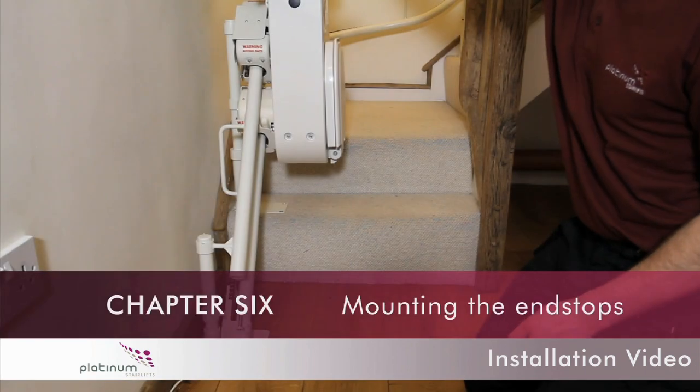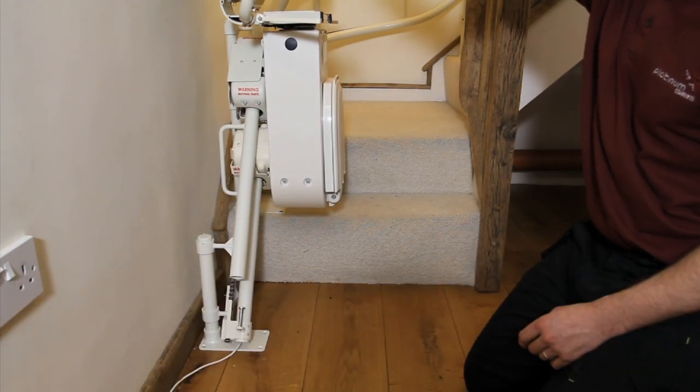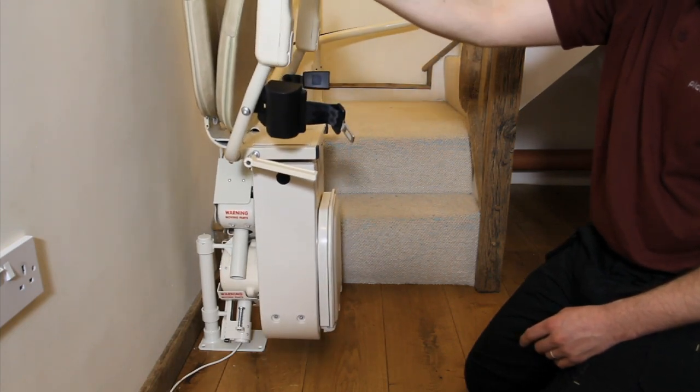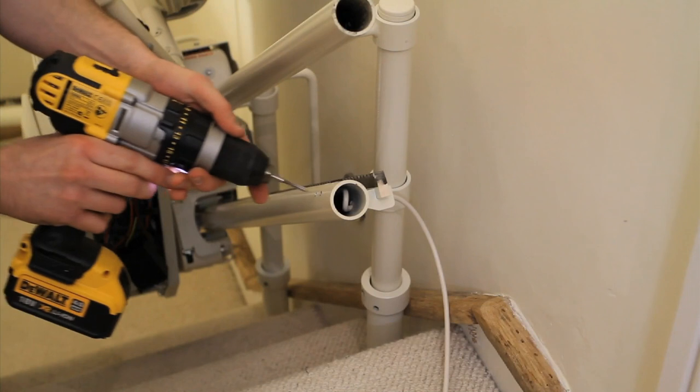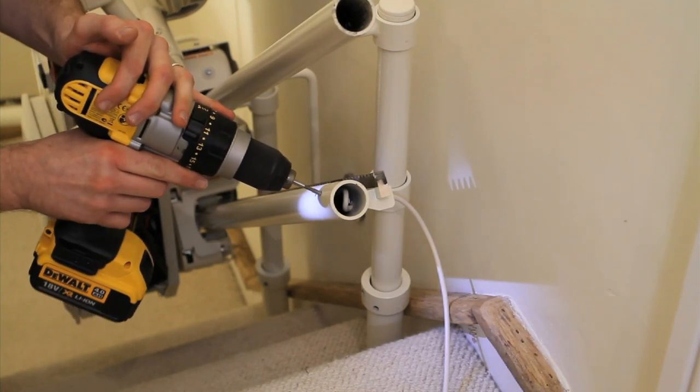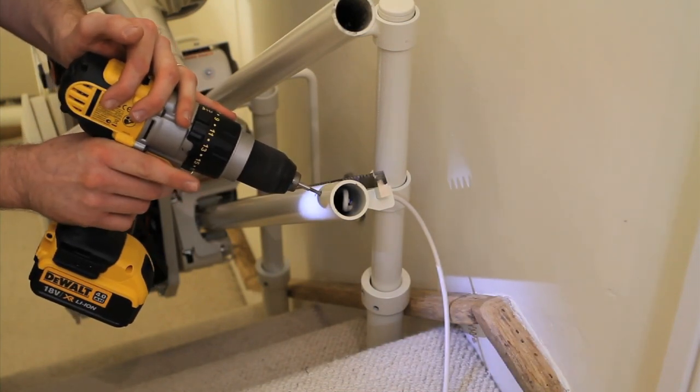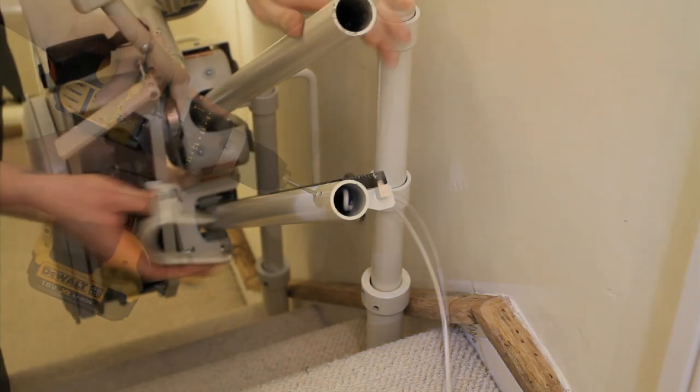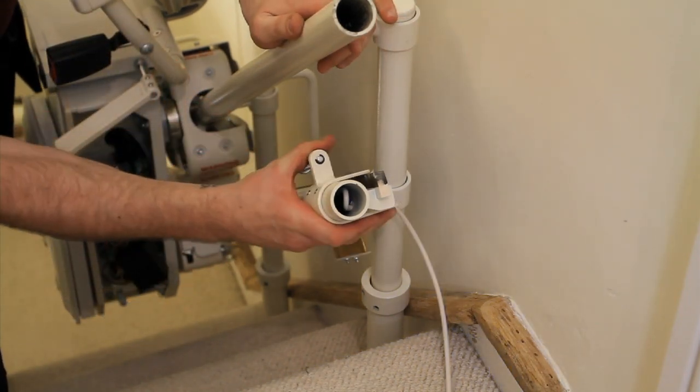Chapter 6: Mounting the end stops. Before mounting the end stops, move the carriage to each end of the rail to determine the end stop positions at both the bottom and top of the rail. Once you are happy with your end stop positioning, drill the bottom tube for each end stop, ensuring NOT to drill through the charging cable and fix them both into place.